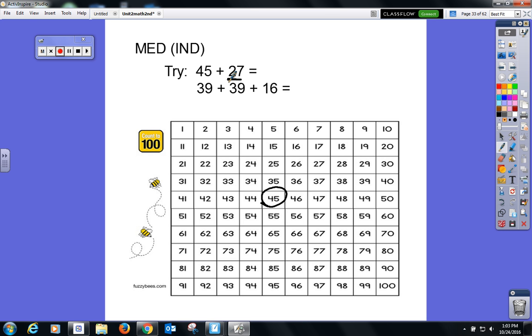And then we're going to add 27. How many tens are in that number 27? Two. Two, good. So we're going to go up or down? Down. Down, we're adding two tens. So 10, 20. We landed on 65.